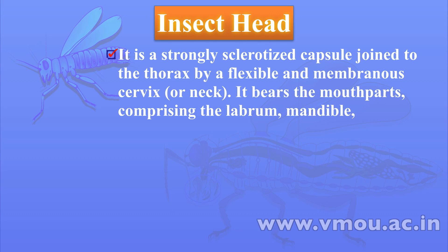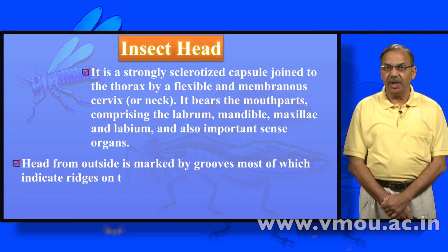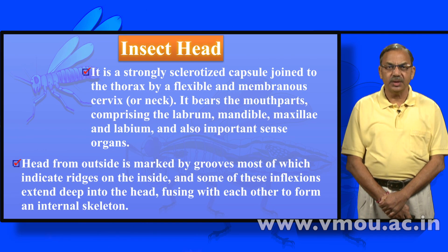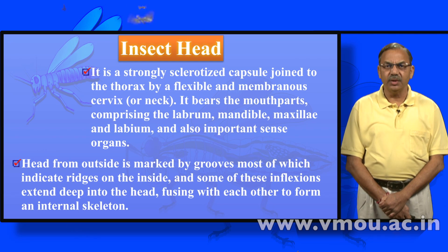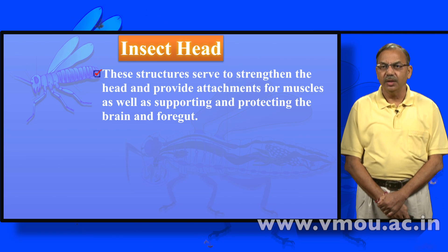The insect head is basically a strongly sclerized capsule joined to the thorax by a flexible and membranous cervix or neck. It bears the mouth parts comprising the labrum, mandible, maxilla and labium, and also important sense organs. The head from outside is marked by grooves, most of which indicate ridges on the inside, and some of these inflections extend deep into the head, fusing with each other to form an internal skeleton.